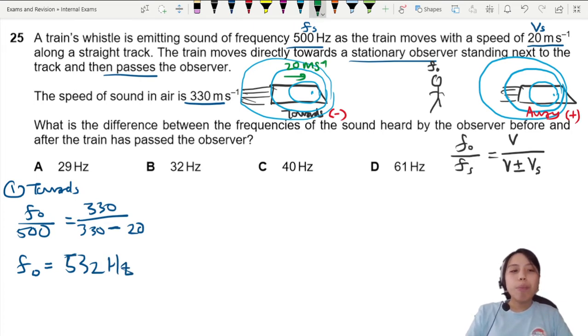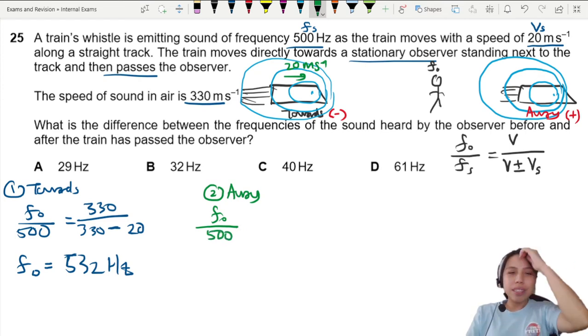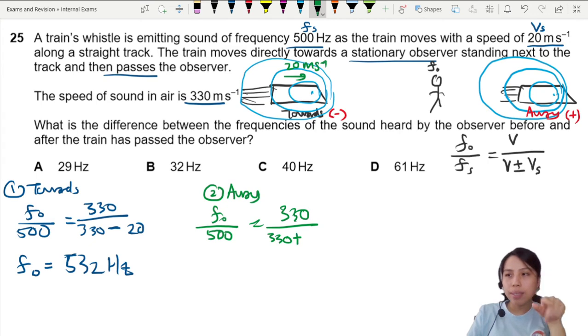Do again for part two when it's moving away. So when you're moving away from me, f observer over source frequency—what is actually being created by the train—speed of sound over speed of sound, but now you plus the speed of source.